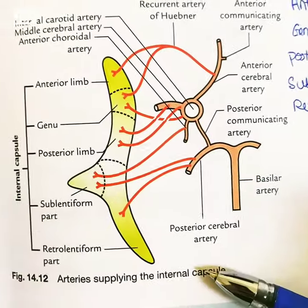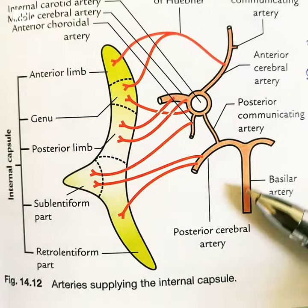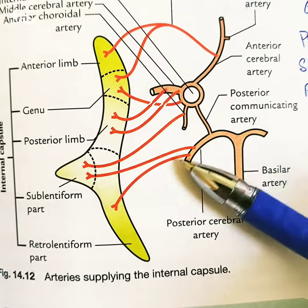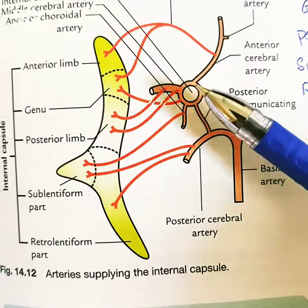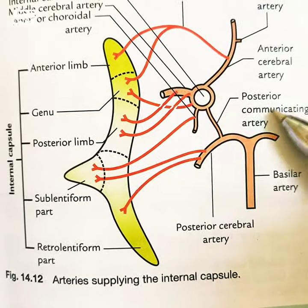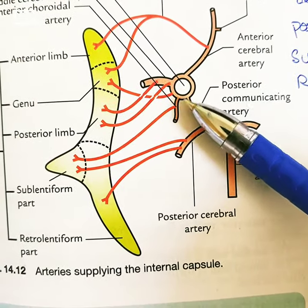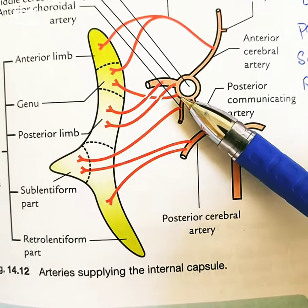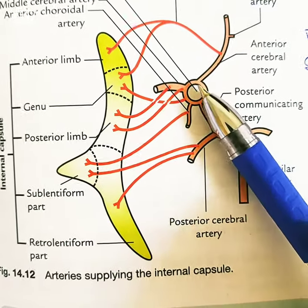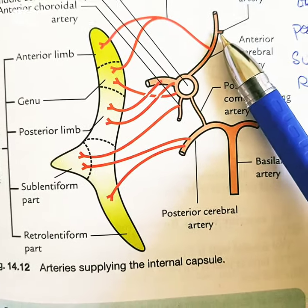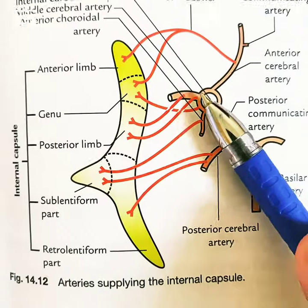This is the blood supply of the internal capsule. You can see here the circle of Willis. The basilar artery divides into posterior cerebral arteries, and the posterior cerebral arteries and the internal carotid artery are connected by the posterior communicating branch. The internal carotid artery also gives the middle cerebral artery, the anterior cerebral artery, and the anterior communicating branch.